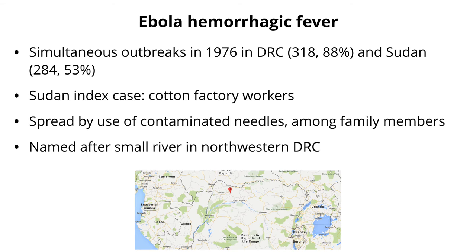Also in 1976, there was an outbreak of hemorrhagic fever in the Democratic Republic of the Congo — 318 cases with an 88% case fatality rate. The case fatality rate is the number of deaths over the number of laboratory-confirmed infections. There was an outbreak in the same year in Sudan — 284 cases, 53% case fatality ratio. The index case in the Sudan outbreak involved cotton factory workers; the infection was spread by contaminated needles, which is very common in these areas because they can't afford disposable plastic needles and use glass needles that aren't properly autoclaved.